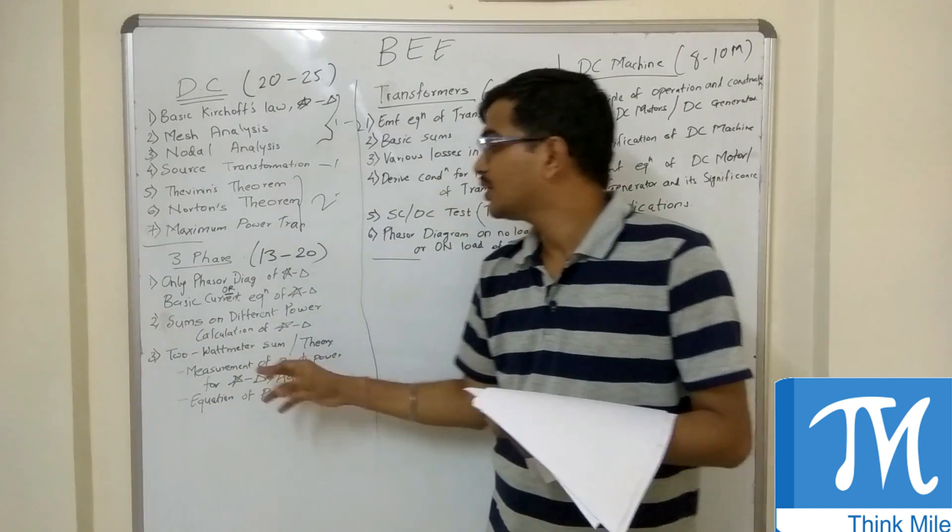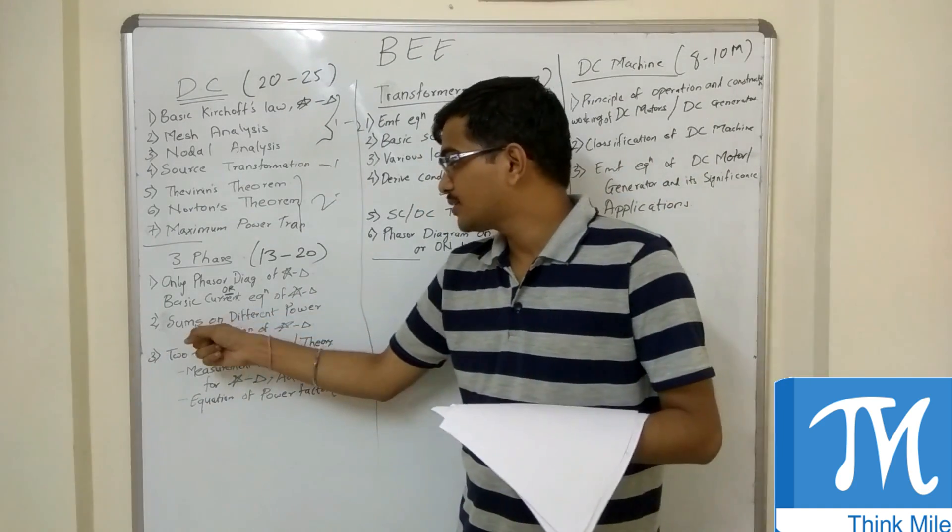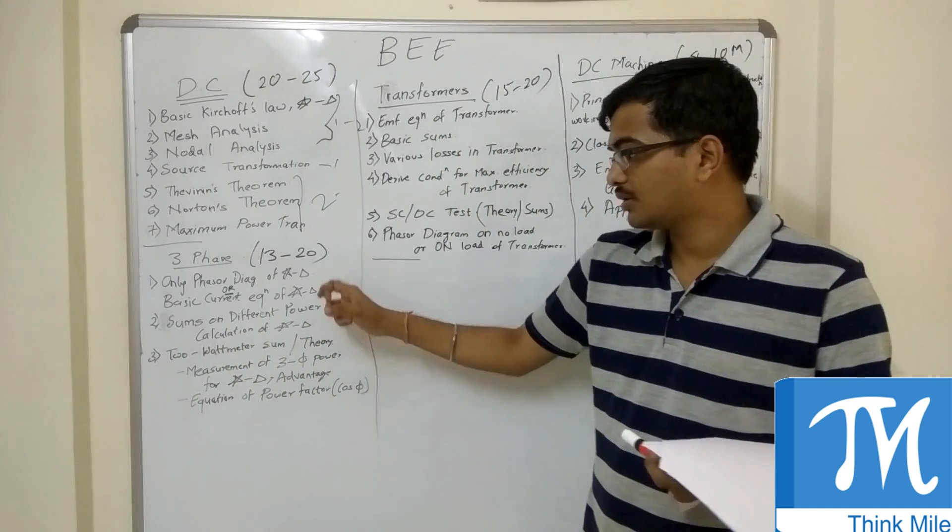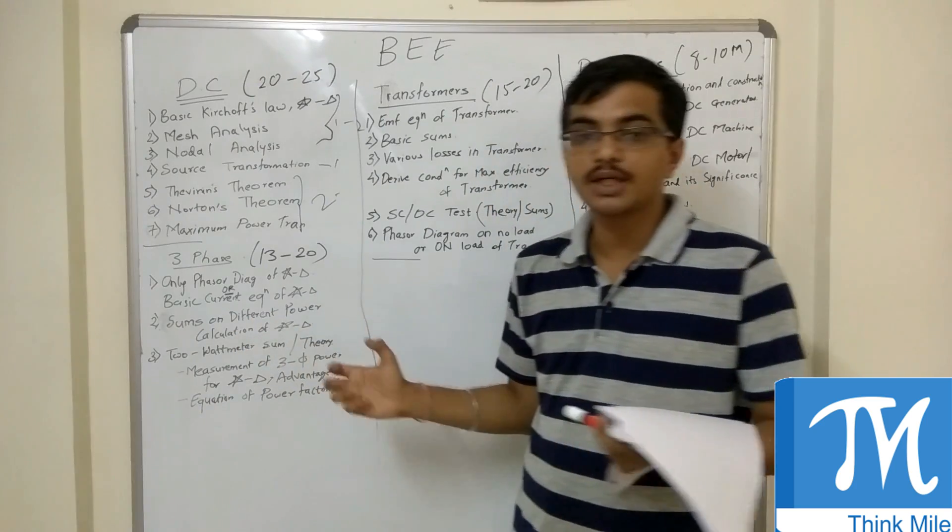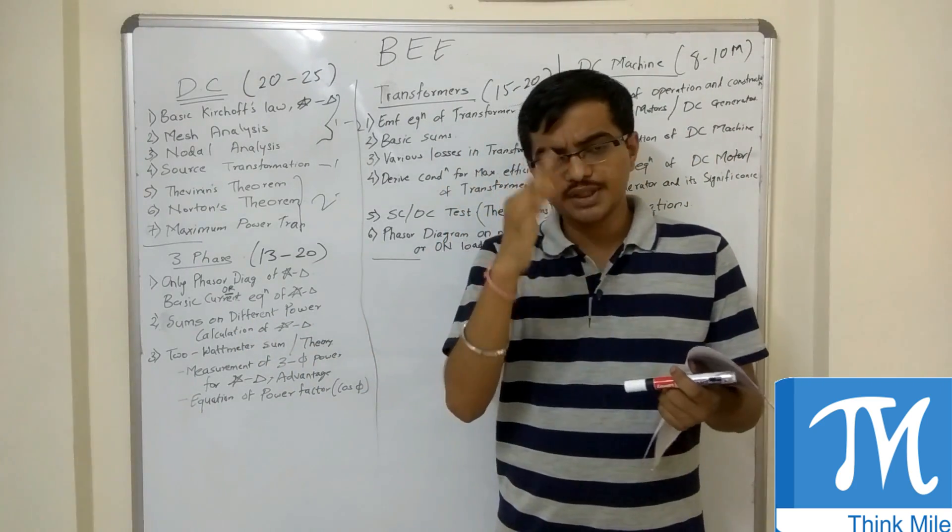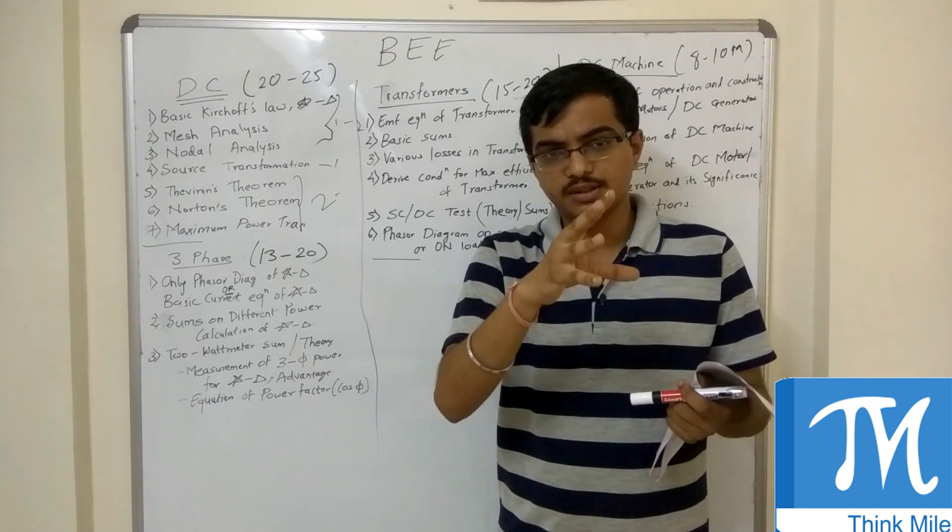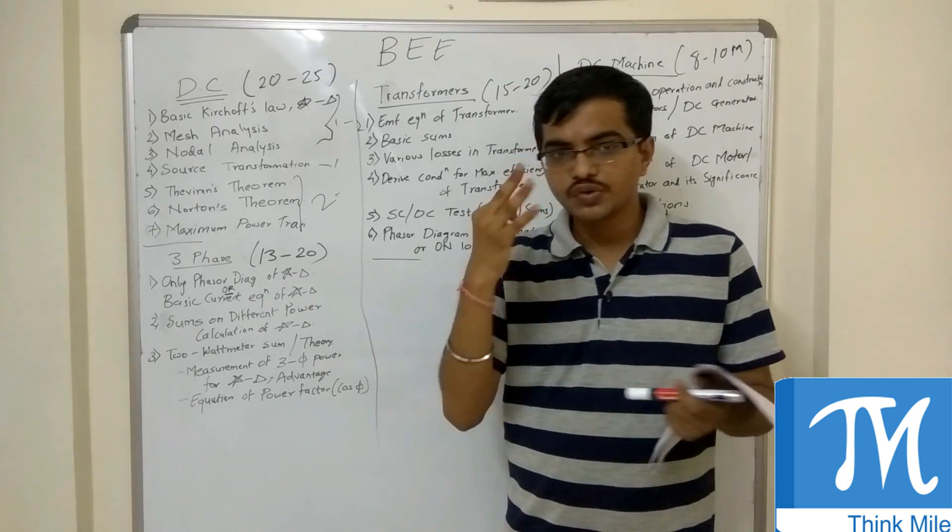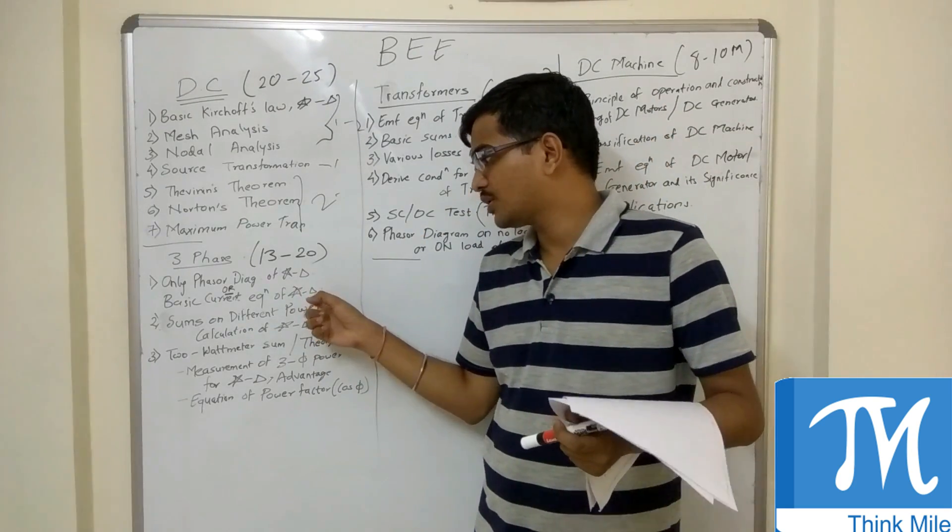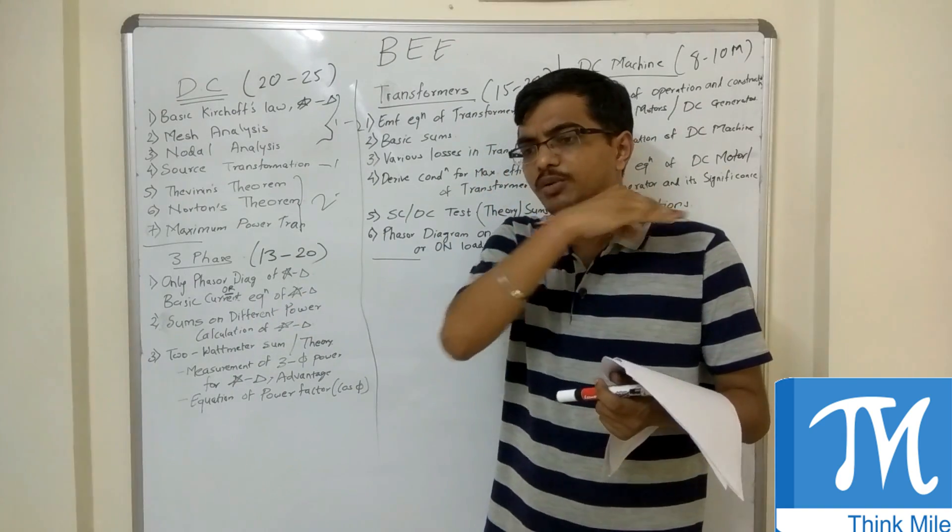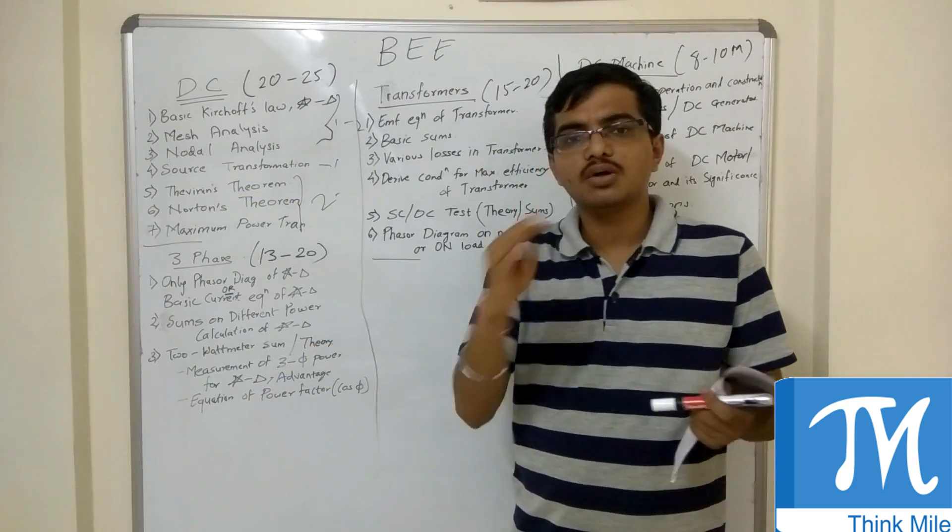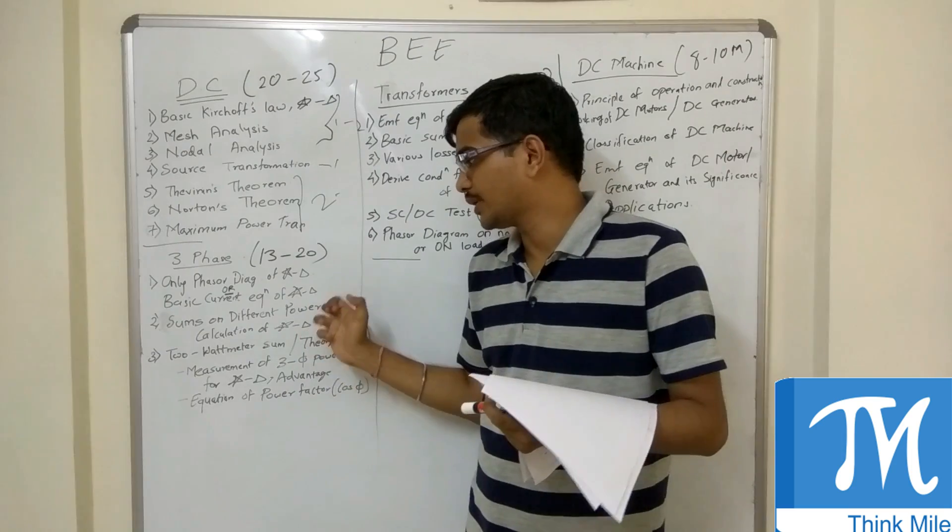Then there can be a sum on different power calculation of star delta. If you see there are different types of powers in star and delta, so you will be told to calculate those powers - it will be mentioned in the question if it's a star connected circuit or delta connected circuit accordingly.